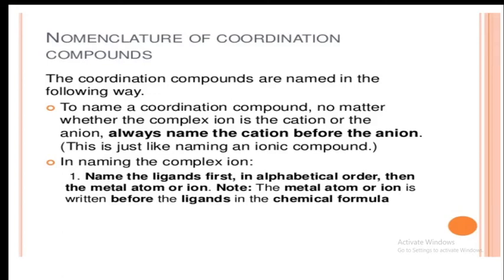Dear students, in this class let us learn about the naming of coordination compounds. Let us consider the rules for naming of complexes. To name a coordination compound, no matter whether the complex ion is the cation or the anion, always name the cation before the anion. This is just like naming an ionic compound.